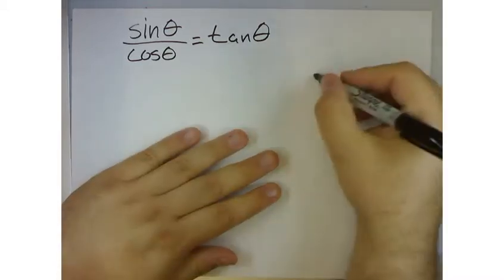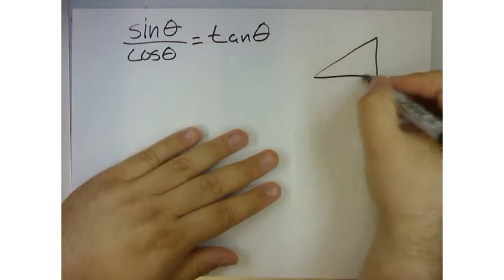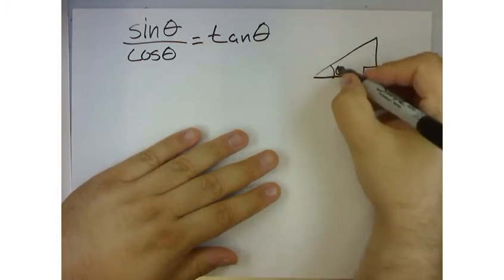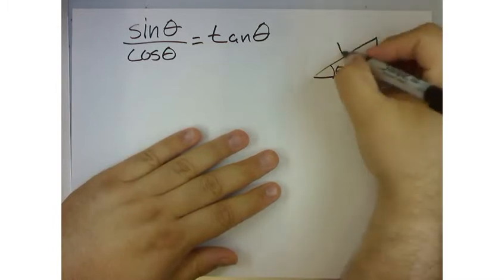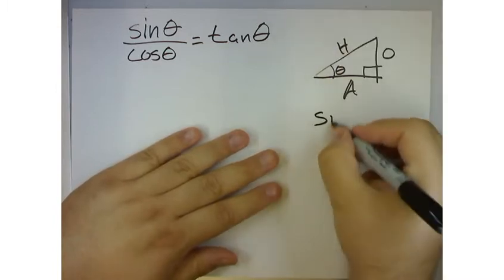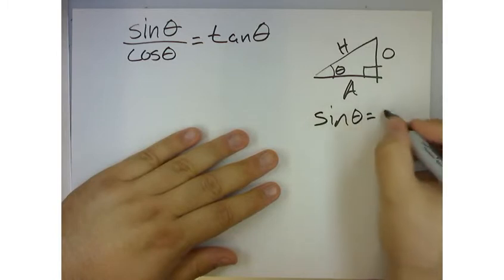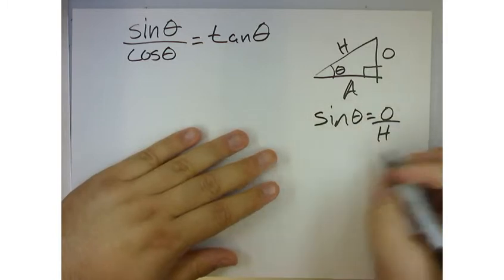So consider the fact that these trigonometric functions, we have theta here, this is the opposite side, this is the adjacent side, this is the hypotenuse. And so we say that sine of theta is equal to the opposite over the hypotenuse.